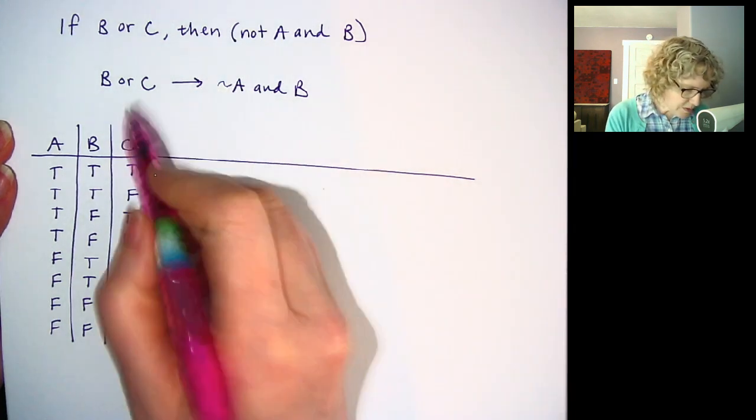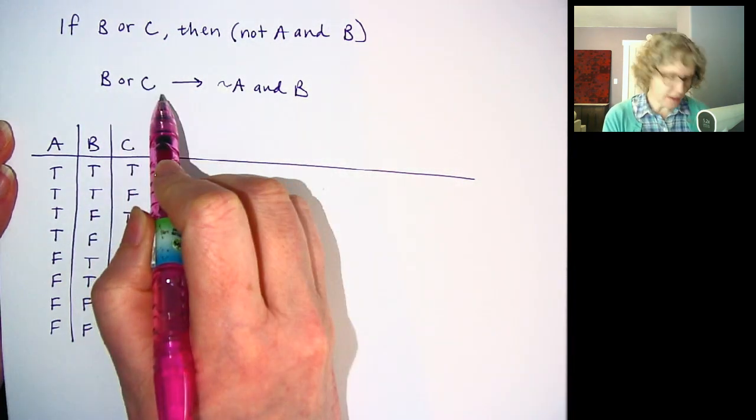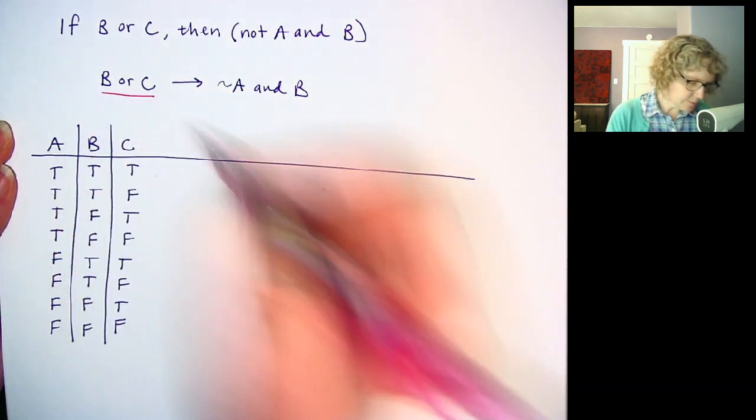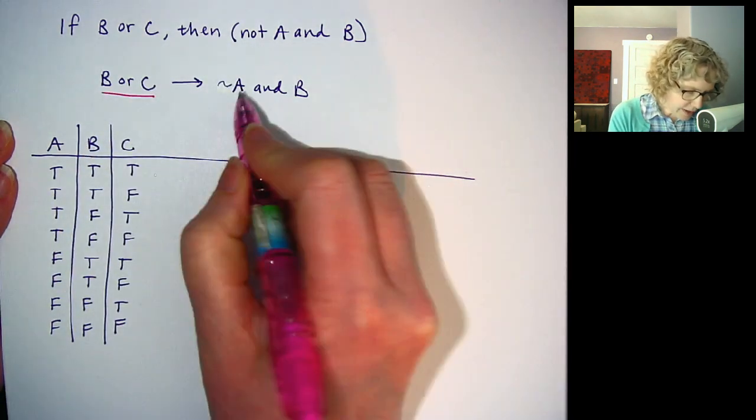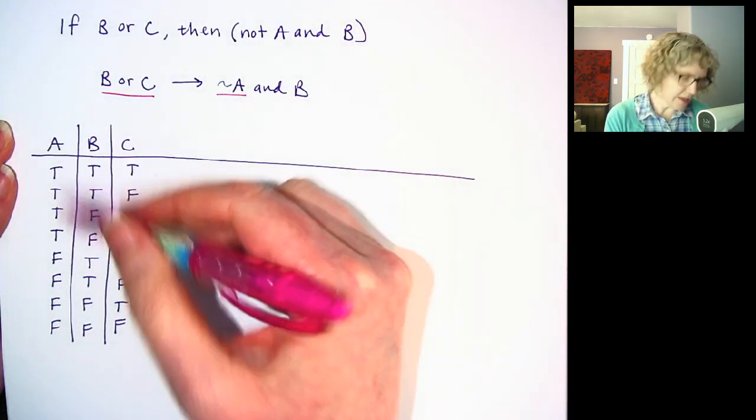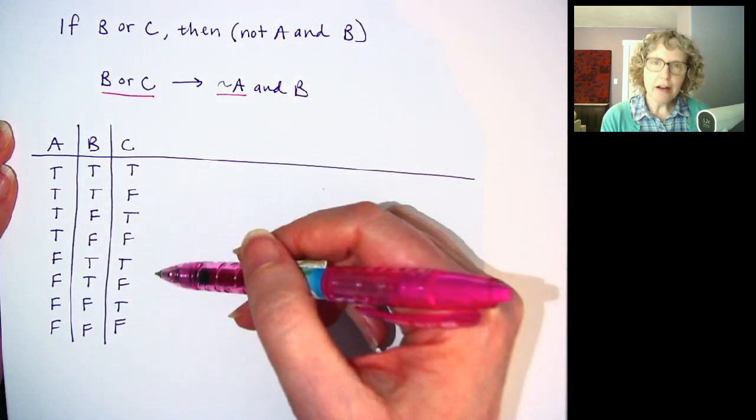So B or C, that's one operation, right? That's an or. So I'm going to underline that. Then we also have not A. So that's another column that I can make because we have the A column, but we don't have the not A column.